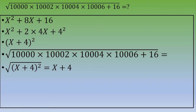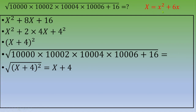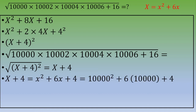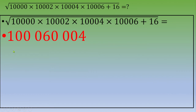Recalling that X = x² + 6x, we get X + 4 = x² + 6x + 4. Substituting x = 10,000, this is 10,000² + 6 × 10,000 + 4 = 100,000,000 + 60,000 + 4 = 100,060,004.